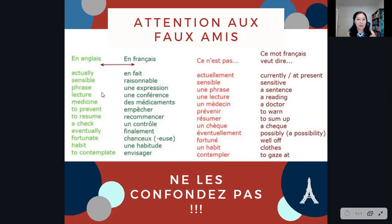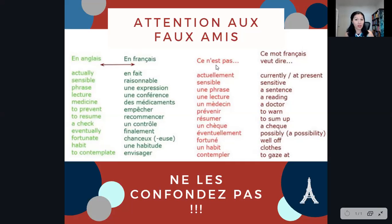En anglais, quand vous pensez au mot 'medicine,' en français, on dit 'des médicaments.' For example: Je vais à la pharmacie pour acheter des médicaments — I'm going to the pharmacy to buy some medicine. We do have a word that looks a bit more like 'medicine,' and it's 'un médecin,' but that's the doctor — the actual person. Un médecin is a doctor.